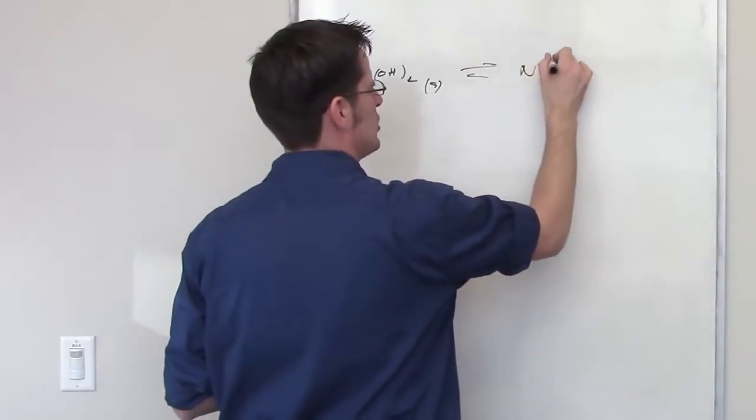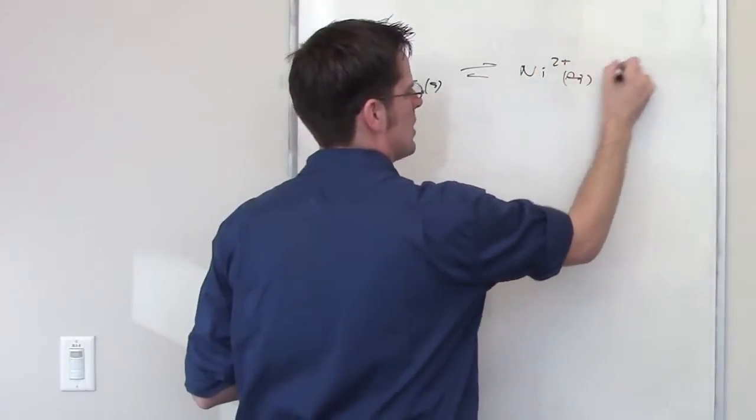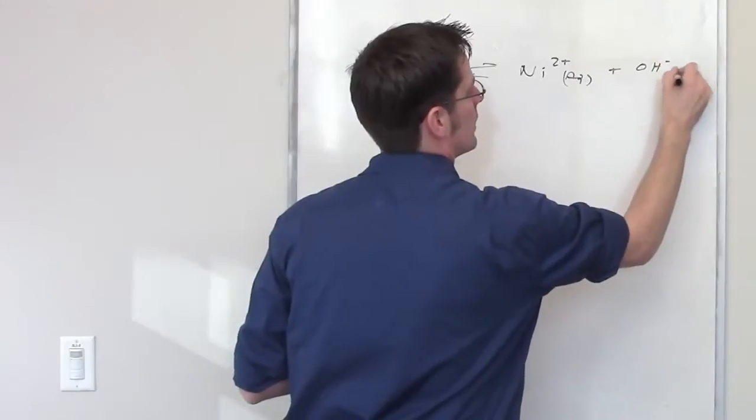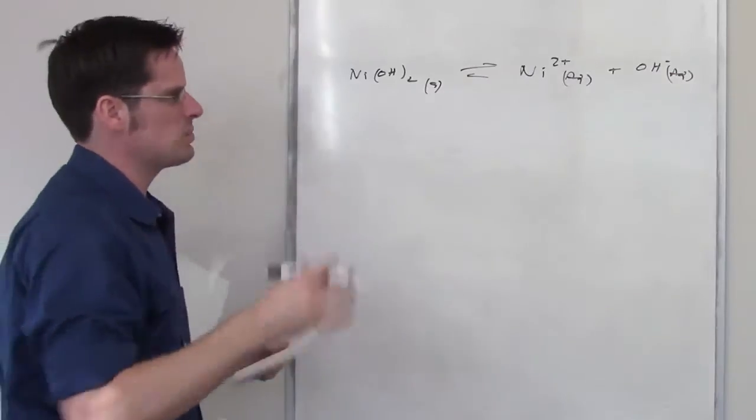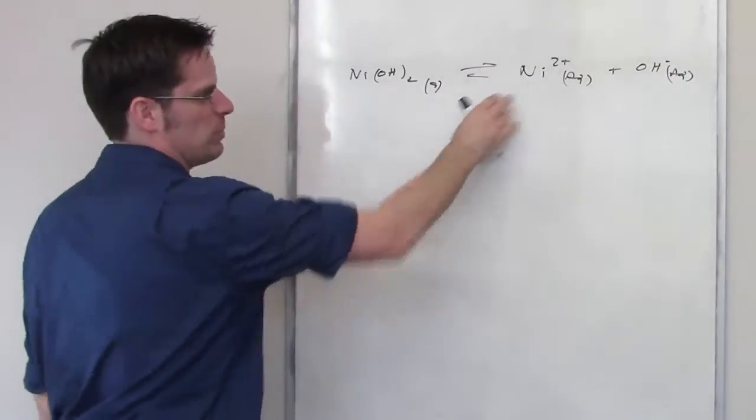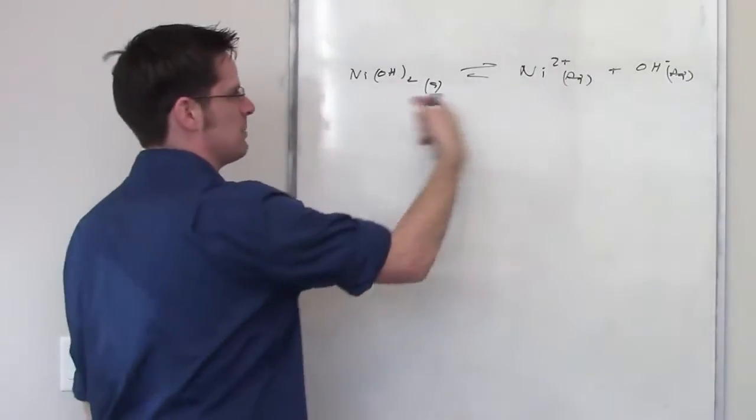It's going to dissociate to form nickel 2+ and hydroxide minus. It then asks me what the amount of nickel 2+ is that I have to add in order to get precipitation to occur.